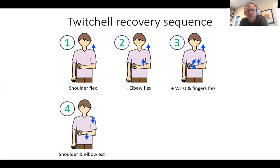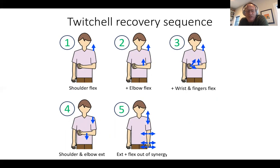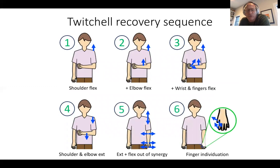You can then see another synergy — not always in this sequence, sometimes coming first — which is the extensor synergy, where instead of flexion, you get extension around the shoulder and elbow. If you're lucky as a patient, you can then begin to break out of these two obligate synergies — the flexor and the extensor — and begin to move out of synergy. For example, you might be able to flex the shoulder and extend the elbow. And if you're really fortunate, out-of-synergy movements can extend down to individuation of the fingers. So here you can see this sequence: from plegia, to flexor synergies, to extensor synergies, to out-of-synergy movements.